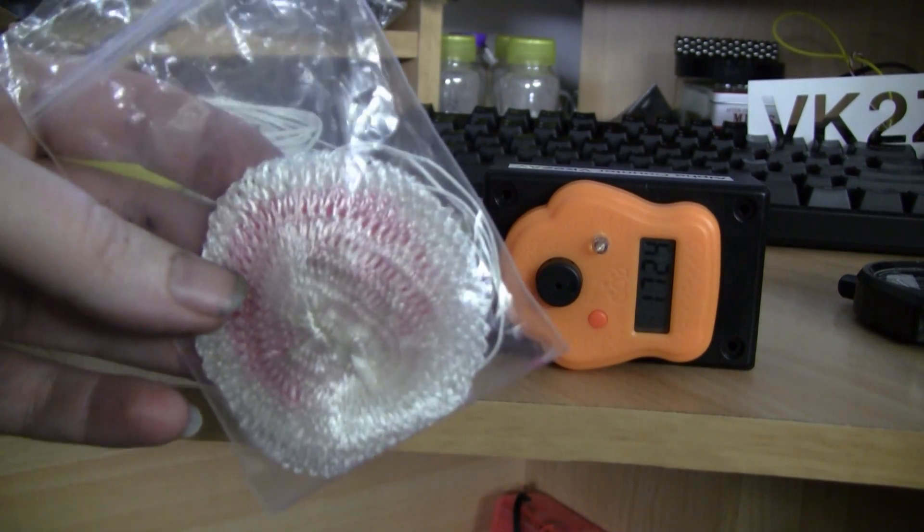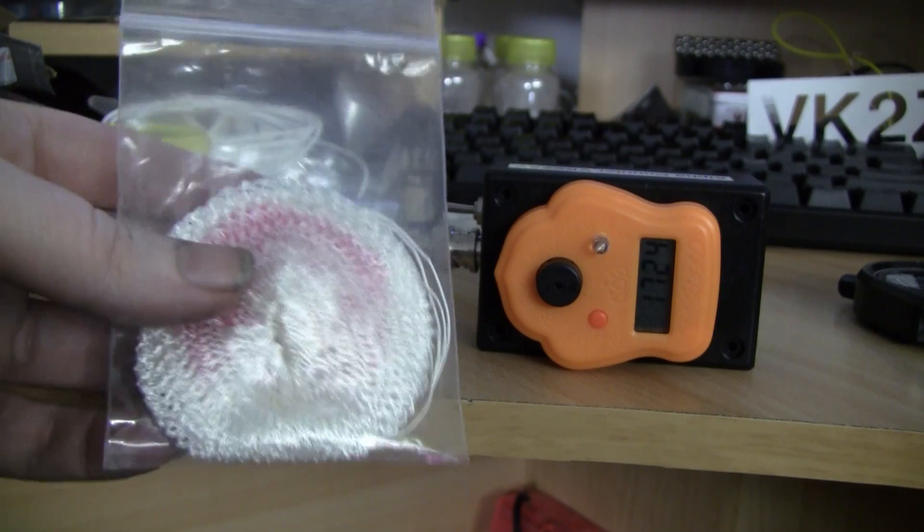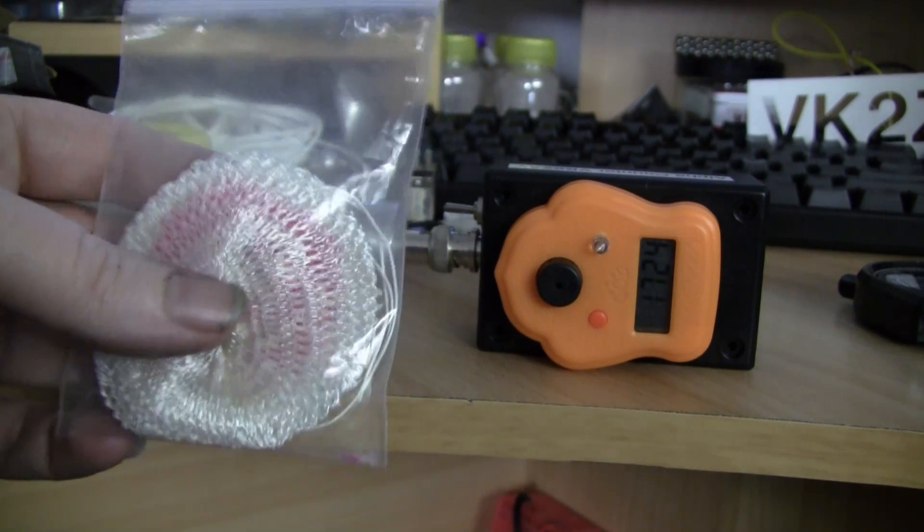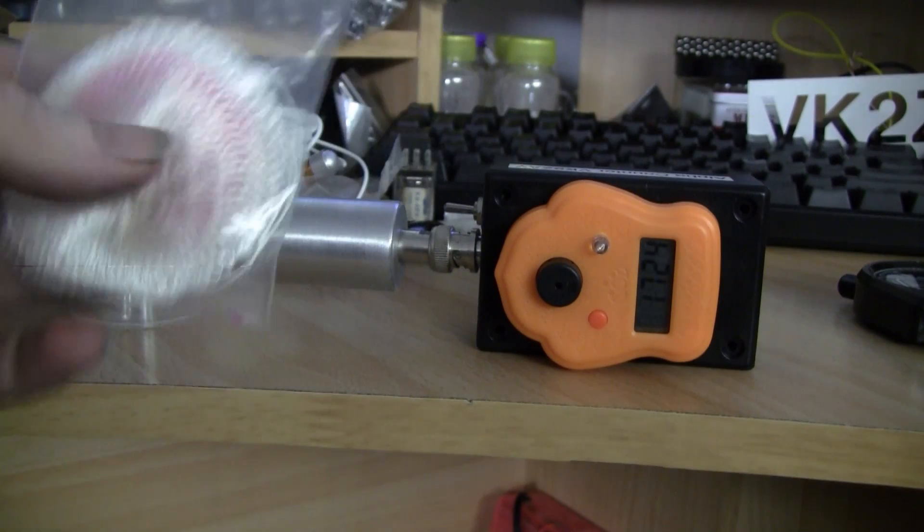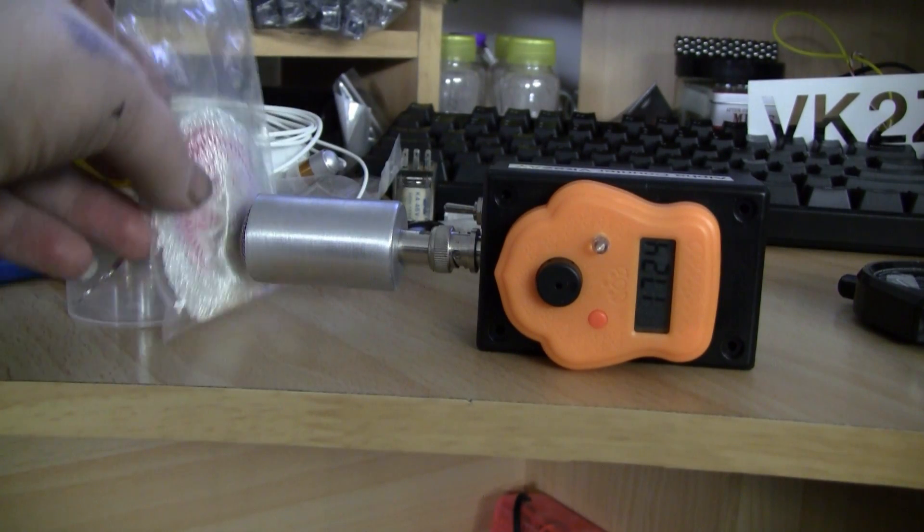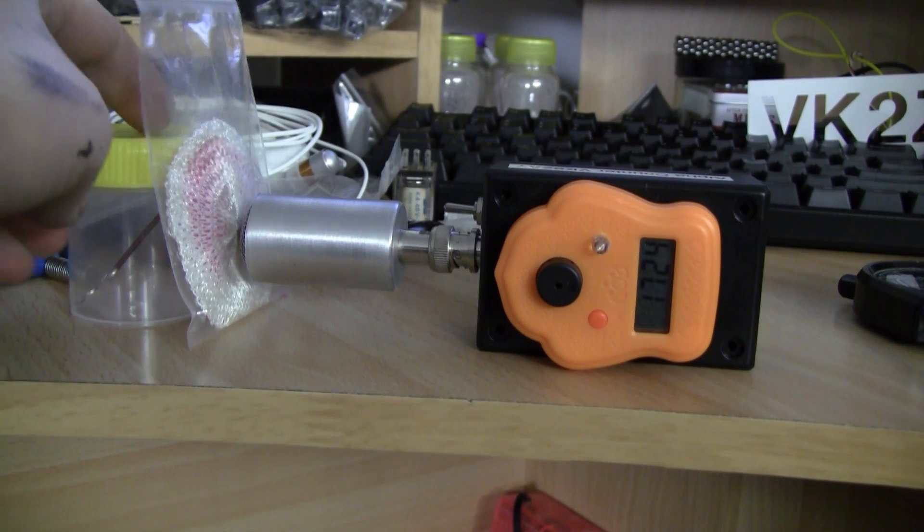They're a good alpha emitter but inside the plastic bag very very few alphas get through so this is, although it's a relatively strong source inside the bag, outside the bag it's a very weak source so you're only getting a few counts per second over the whole surface.